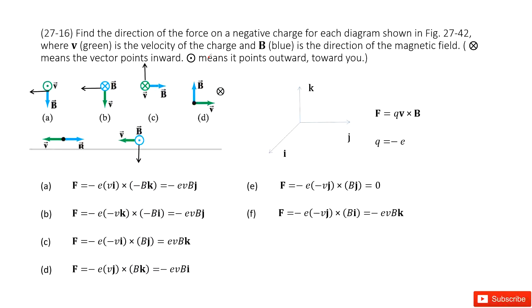We need to determine the direction of the magnetic force on a negative charge, a negative charge keyword for each case. In this picture, V is the velocity and B is the magnetic field. We need to solve it.